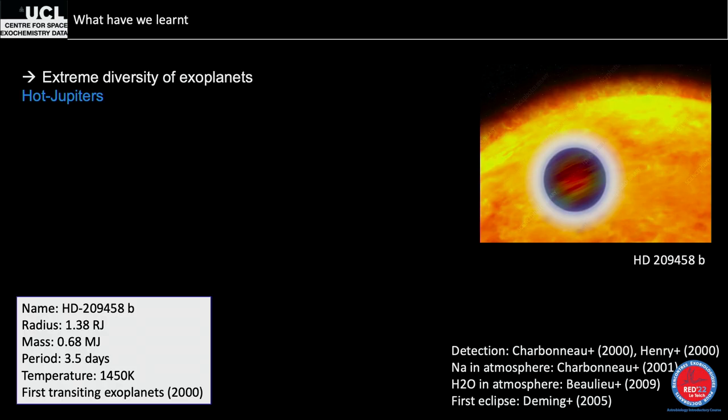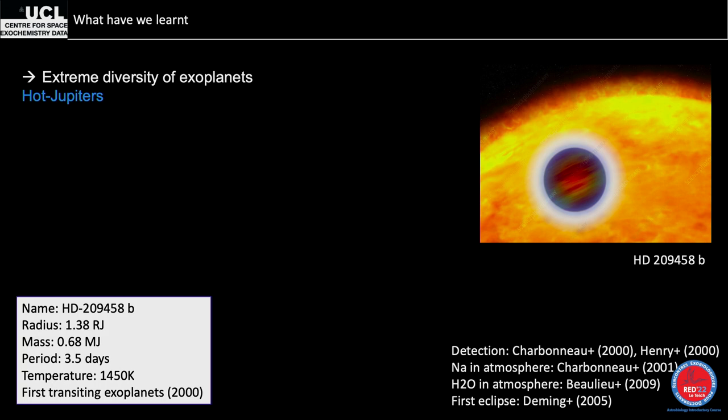KELT-11b is interesting because although it has a large radius of 1.37 Jupiter radii, its mass is only 0.2 Jupiter masses — making it what the press calls a 'super puff.' It has extremely low density, making it very hard to explain why this planet can exist.